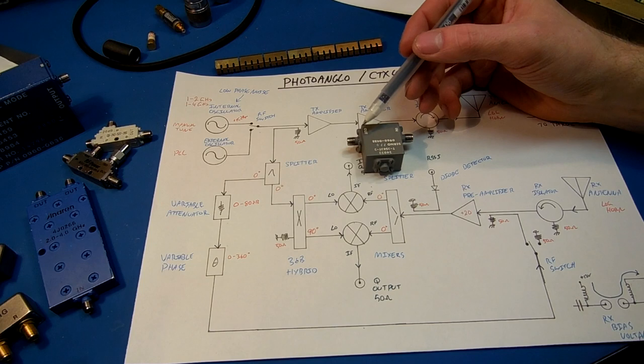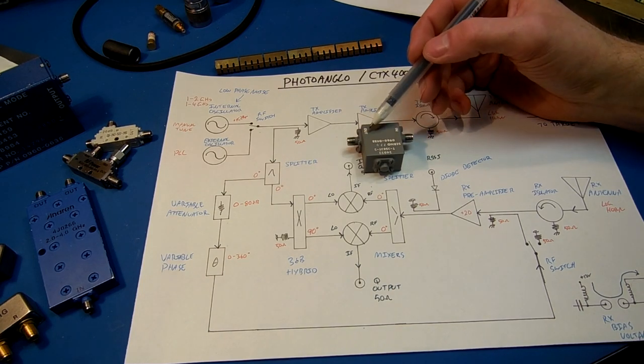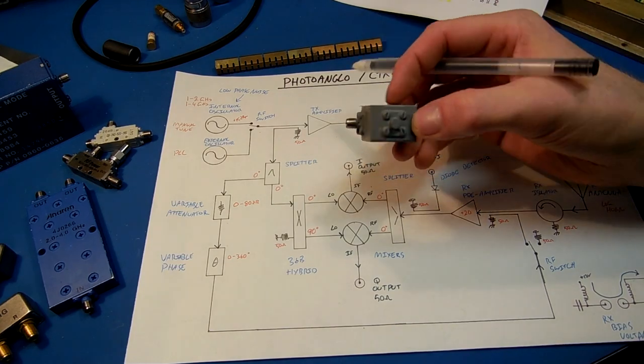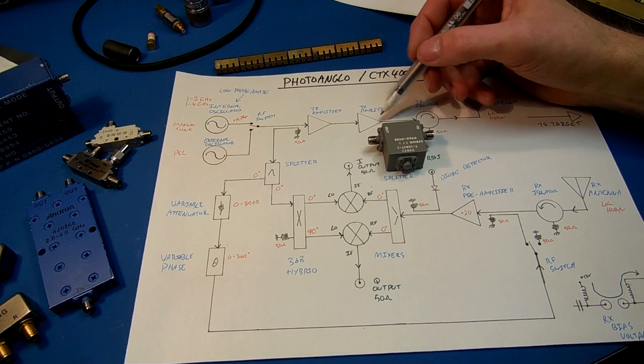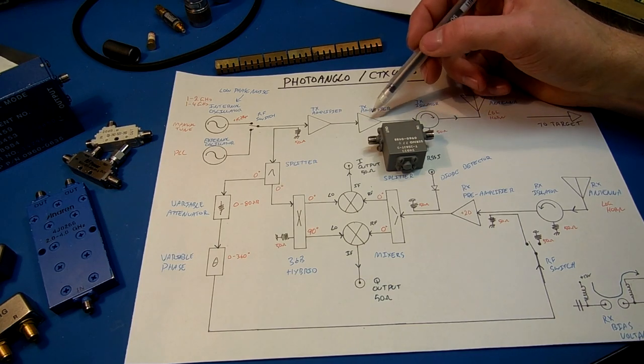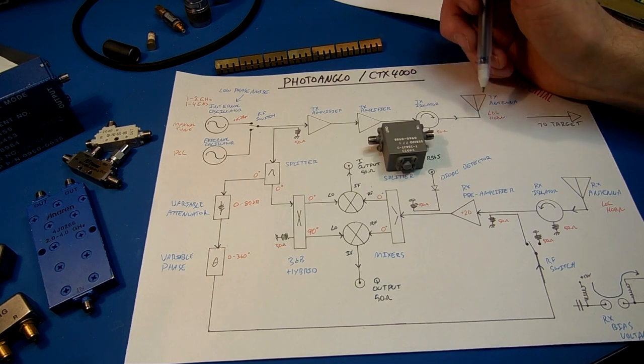On the output of the amplifier we have a device called an isolator. What this does is, it only allows RF to flow in one direction. Any reflected power gets sent to a 50 ohm load in this case, as an internal load. What that does is isolate the stages from each other. So the transmit amplifier feeding the antenna essentially never sees the antenna.